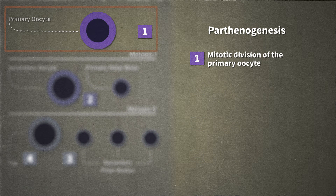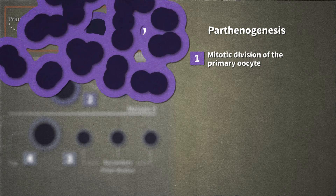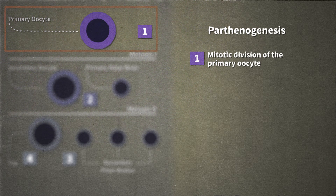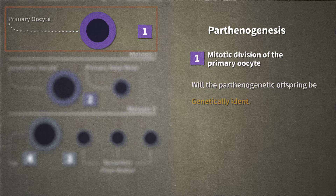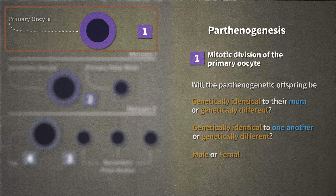Imagine that a female reproduces by parthenogenesis without undergoing meiosis, as primary oocytes develop directly into offspring by mitosis instead. Will the parthenogenetic offspring be genetically identical to their mom, or genetically different? Will the offspring be genetically identical to one another, or genetically different? Will the offspring be male or female?